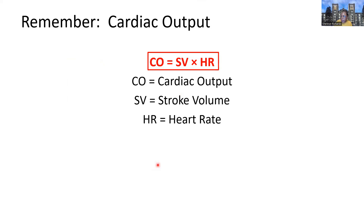That was the heart rate, the sinoatrial nodal cells, and the neural and hormonal input. Let's come back to our equation and think about cardiac output again. Cardiac output is stroke volume times heart rate, and we've just described the many variables that can influence heart rate. Now we're going to shift gears and look at the many variables that can influence stroke volume.